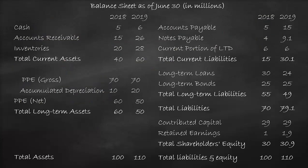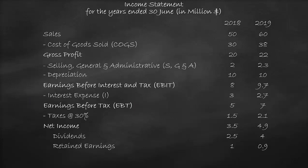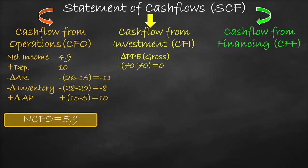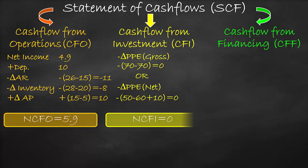The second approach is a negative change in PPE net. Since PPE net is the value of tangible assets after deducting accumulated depreciation, the formula is: negative (PPE net 2019 minus PPE net 2018 plus annual depreciation of 2019). We include annual depreciation because we measure the change in one year only. Negative (50 minus 60 plus 10) equals zero. So, the net cash flow from investment is zero.